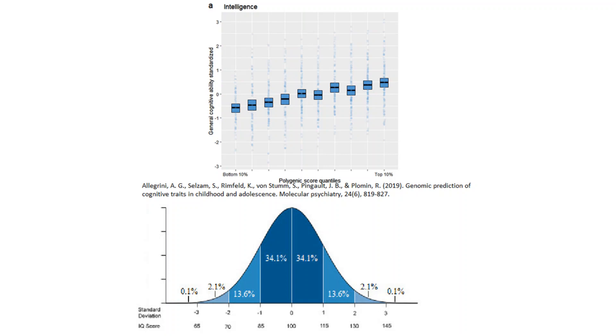This polygenic score has an R-squared value of 0.11. In other words, this model accounts for 11% of the variation in IQ scores. Individuals in the highest decile have a mean IQ which is about half a standard deviation above the mean, whereas those in the bottom decile have a mean IQ about half a standard deviation below the mean.